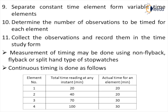Determine the number of observations that have to be timed, collect the observations and record them in the time study form. This is done using non-flyback, flyback, and split types of stopwatches. With one type, you start the watch and when you press the knob it stops immediately; when you release it, it starts from zero. With another type, it records time continuously with intermediate readings, so every time you press the button you can measure the time for each element.